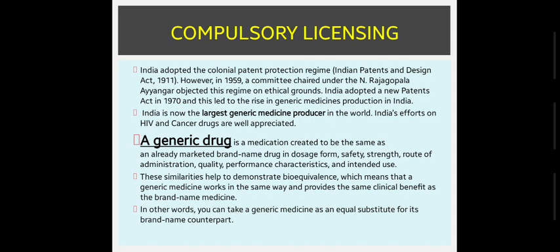India adopted the colonial patent protection regime, that is the Indian Patents and Design Act 1911. However, in 1959, a committee chaired under N. Raja Gopala Ayyengar objected the regime on ethical grounds. India then adopted a new Patents Act in 1970, which led to the rise in generic medicines production in India.